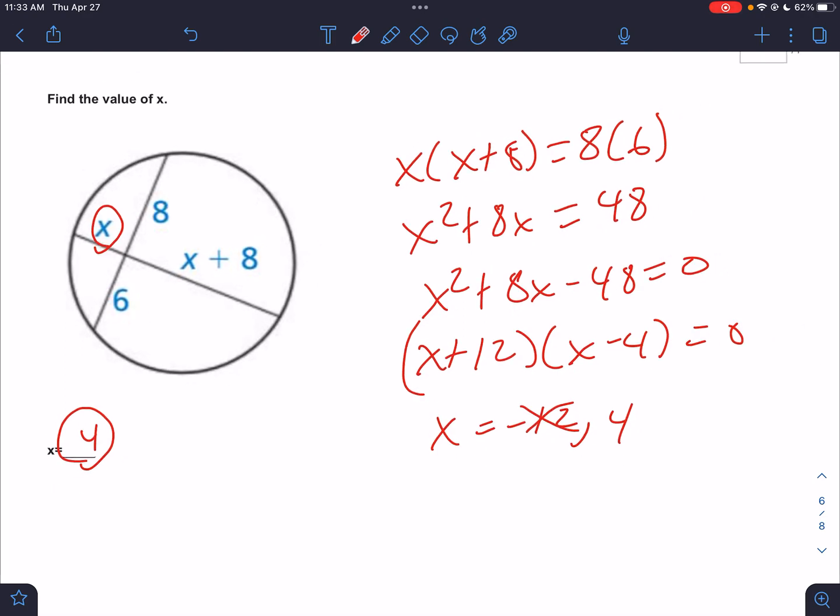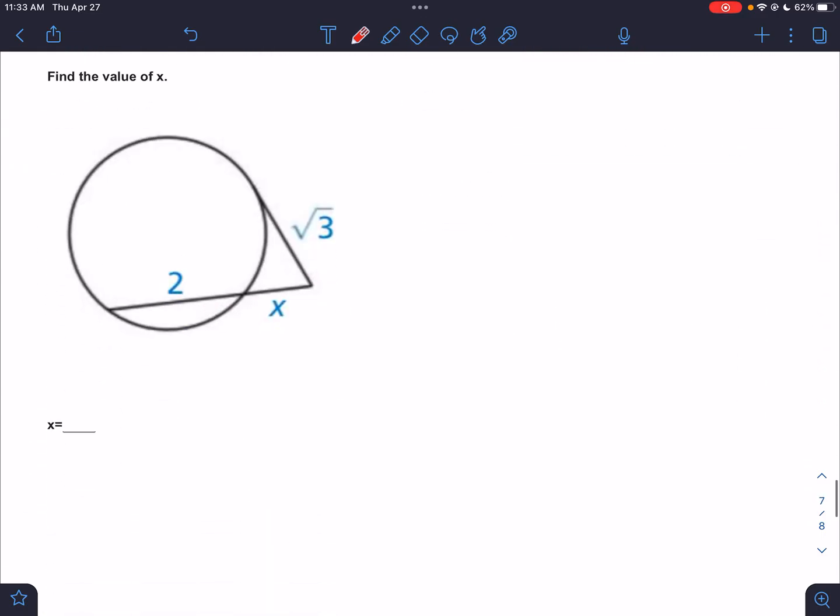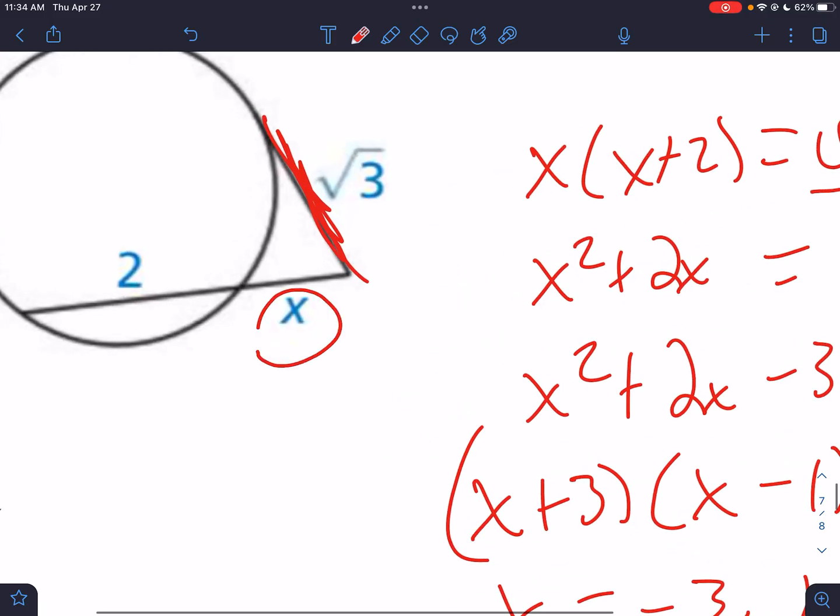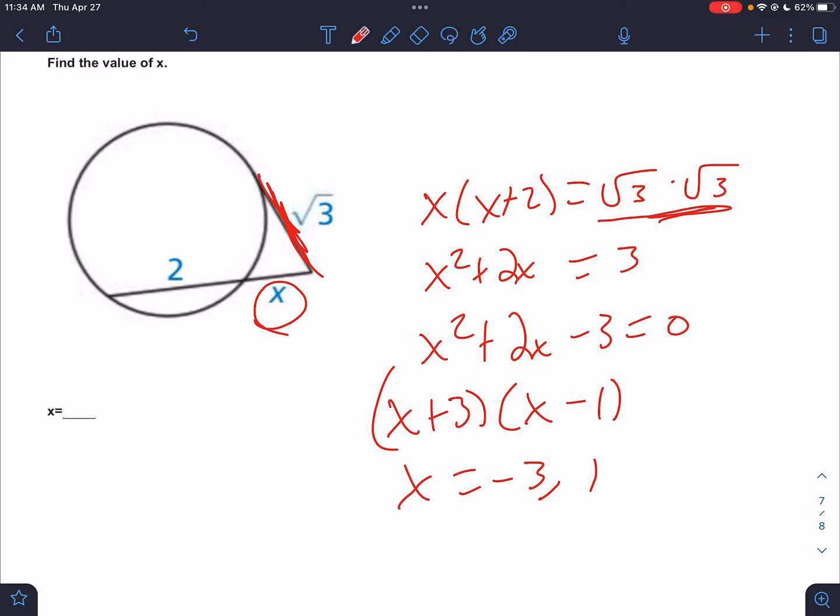So these are just a review of things we did last time. Hopefully you're hitting pause and trying them before I do them. Here again, we have outside times total equals outside times total. Remember that a tangent is unique. The outside is the total. So that's x squared plus 2x. What is that? That's 3. So x squared plus 2x minus 3. That's going to be x plus 3 times x minus 1. That's going to be negative 3 or 1. But once again, can x be negative? Not on this one. I do need to remind you, x can be negative. As a general rule, being negative is not a problem. It's only a problem if you plug it in and it's still negative. So x equals 1 is the only answer that works.